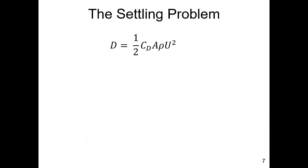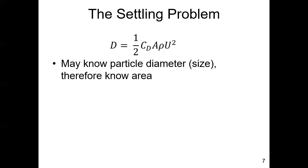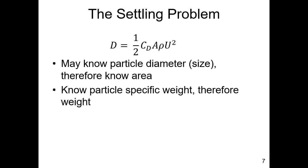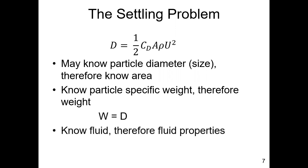For the settling problem, we use the drag coefficient as the fundamental equation. We may know the particle diameter, which gives us the area. Particle size is also involved in the Reynolds number. If we know the particle's specific weight or specific gravity, we know the particle's weight. In a system in equilibrium at constant terminal velocity, weight equals drag force. Knowing the fluid gives us fluid properties: density appears in the drag equation, while density and viscosity or kinematic viscosity appear in the Reynolds number.